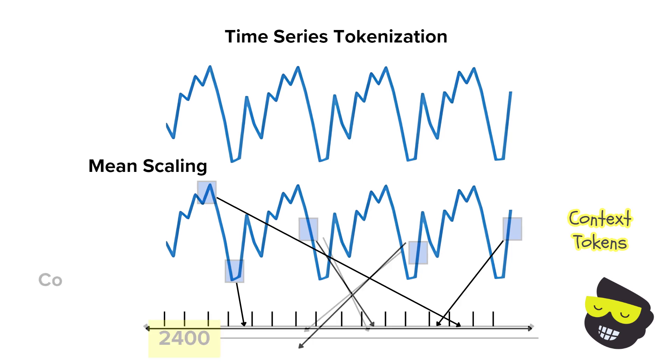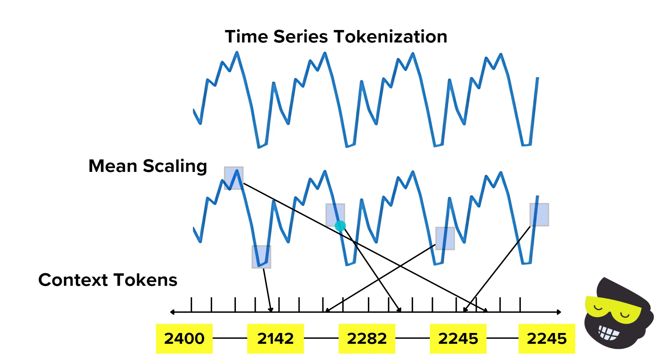For instance, the series 72, 75, 78, 76, 73 might be tokenized into 2,400, 2,142, and so on.